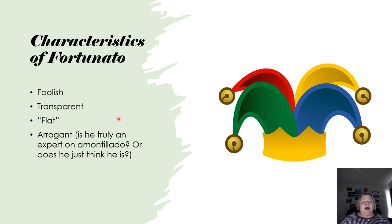He's a flat character, and that means that he doesn't change throughout the story. He's the same. He does not have the capacity to change as a character. Poe drew him as that. And then finally, he is arrogant. Is he truly an expert on Amontillado or does he just think he is? So that's all for now.